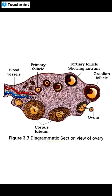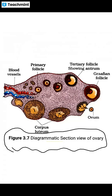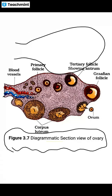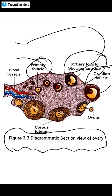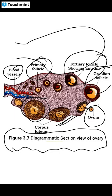Moving on, the next diagram is the transverse section (TS) of the ovary. You must know that primary follicles develop, then secondary and tertiary follicles, and then Graafian follicles, followed by the corpus luteum. Knowing the Graafian follicle structure can get you full marks.